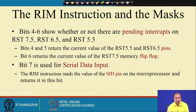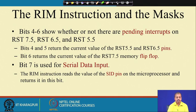Bits 4 to 6 are holding the pending interrupt status, and bit 7 is for the serial data input. The RIM instruction reads the value of the SID pin on the microprocessor and returns it in this particular bit. After executing the RIM instruction, the SID pin value comes to the most significant bit of the accumulator, so we can read the value through the SID pin into accumulator bit 7.